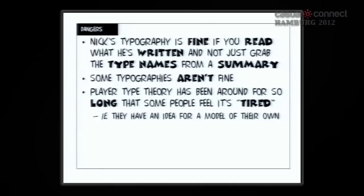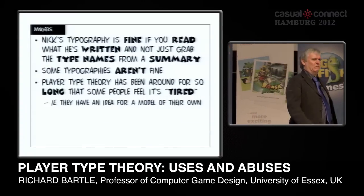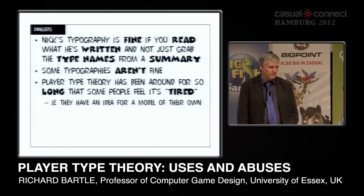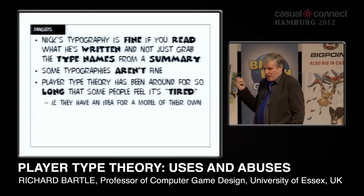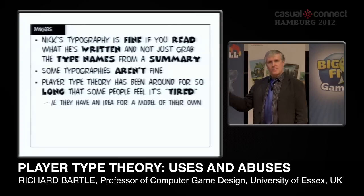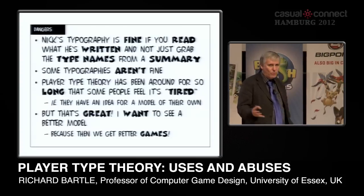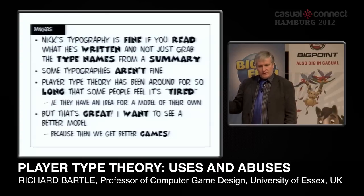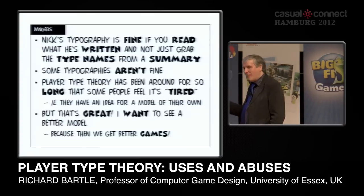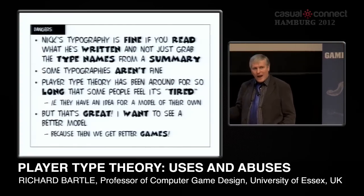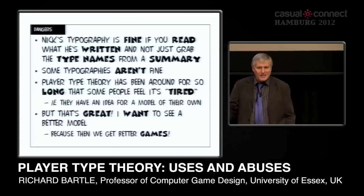Player type theory has been around so long that some people feel it's quite tired — it's an old theory, a bit like Newtonian physics. Who needs gravity? So they'll try to introduce their own model. And that's great — I really want to see player types superseded. I want to see a new theory. I want people to try player types out and break it, because if they break it, they'll understand why it broke. And if they know why it broke, they can fix it or write something better. Better theory means better games, and that's what I want.